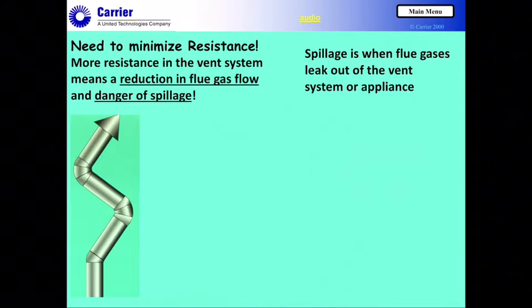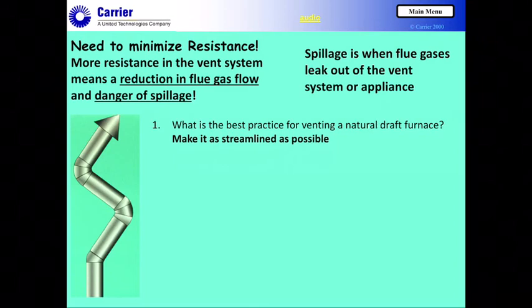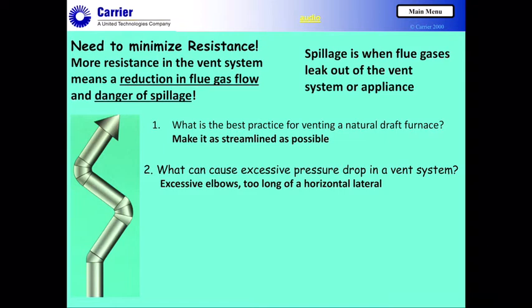One key need is to minimize resistance. More resistance in the vent system means reduced flue gas flow and makes venting more difficult, which also creates a problem with spillage. Spillage is when flue gases leak out of the vent system or appliance and back into the building. Best practice for a natural draft venting system is to make it as streamlined and low-resistance as possible. Excessive pressure drop can come from too many elbows, too long a run, and especially horizontal laterals — even if pitched upward, going horizontally makes venting more difficult.